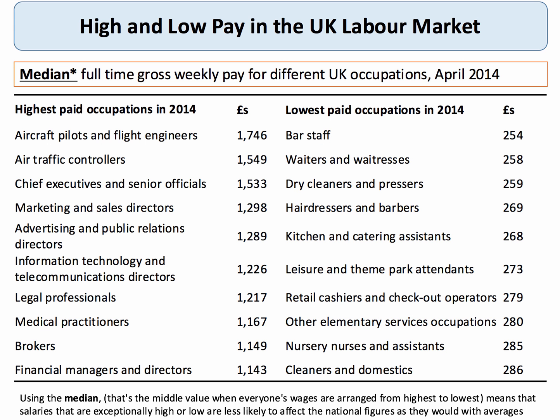Taking data for the UK from 2014, there are big variations in the median full-time gross weekly pay for many different types of jobs. Right at the top are pilots, flight engineers, air traffic controllers, and chief executives earning a median pay of over £1,500 a week. Whereas down in the lower parts of the labour market, people like bar staff, hairdressers and barbers, and people working in leisure and theme parks are earning well less than £300 a week. It's clear that the equilibrium wages in different labour markets vary greatly, and we've got a separate topic video on the key causes of wage and earnings differentials.